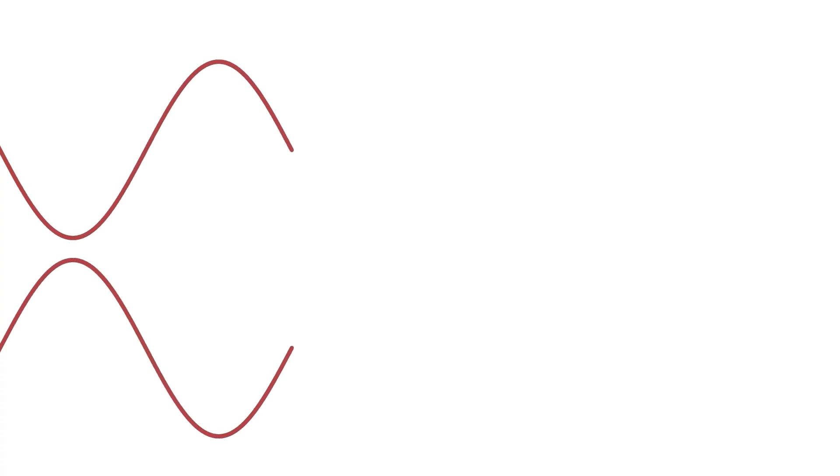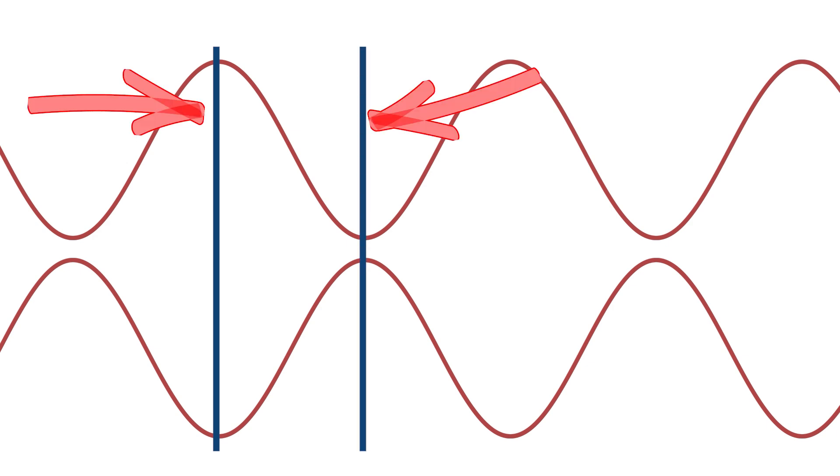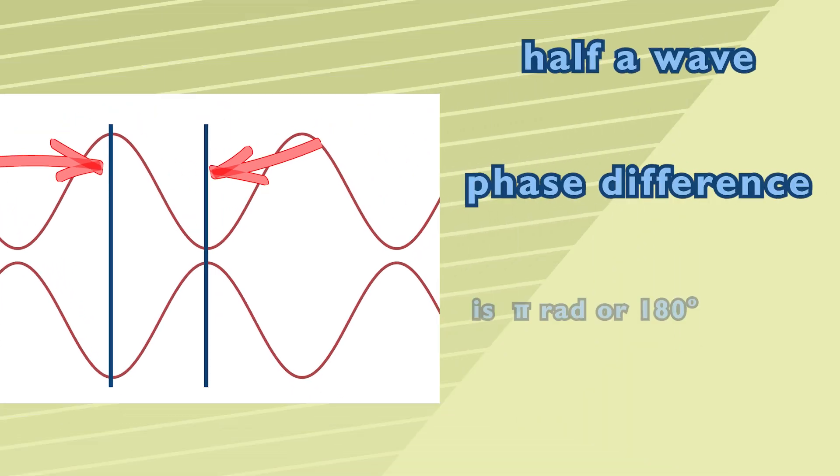Here we see two waves in which the particles are always vibrating in opposite directions to each other. If you drop a line down from one of the peaks on the top wave and take a line up from one of the peaks on the bottom wave you can use the distance between them to get the phase difference. You can see that this is half a wave. Half a wave as you know corresponds to pi radians or 180 degrees.